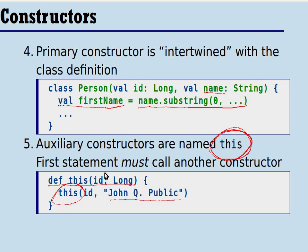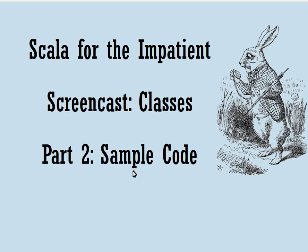Alright, so those are the five key differences between classes in Scala and in other languages such as Java or C++. In the next part of the screencast, we're going to be looking at some sample code. And in the third part, we're going to be looking at some design hints.